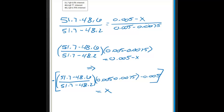What I did was multiply the bottom part over, then subtract this side. Because it came out as negative X equals everything else, I multiplied by negative one, which solves for X. Plugging it into the calculator, we get X equals 0.0072, which is equal to 0.72%.